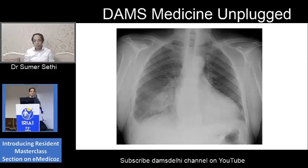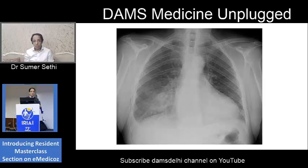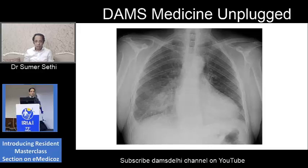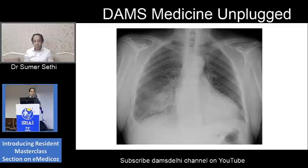I will take this from a resident's perspective. If you are a radiology resident appearing for your MD exam, they will typically keep an X-ray like this in front of you as a spotter. This is a chest X-ray — what do you think is the problem? I want you to look at the right lung field and look at the inferomedial part of the right lung field. Do you think there is some kind of opacity here?